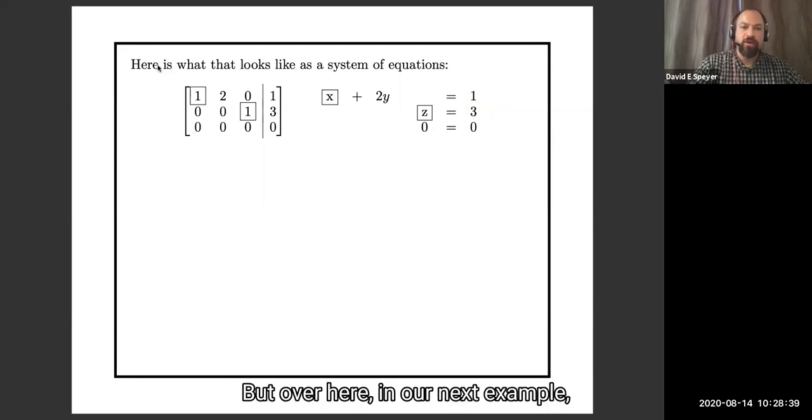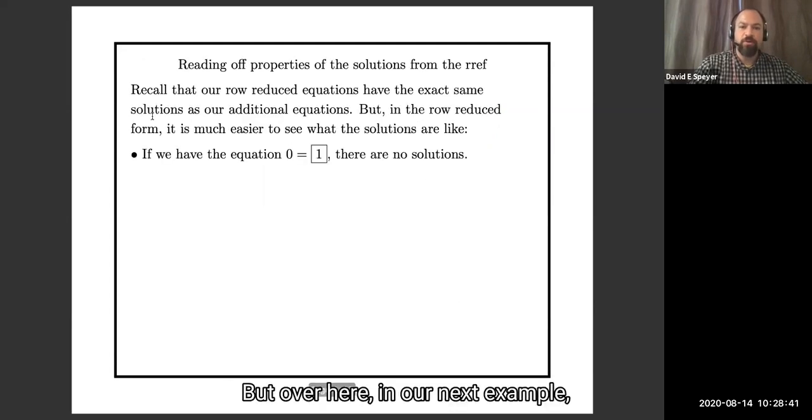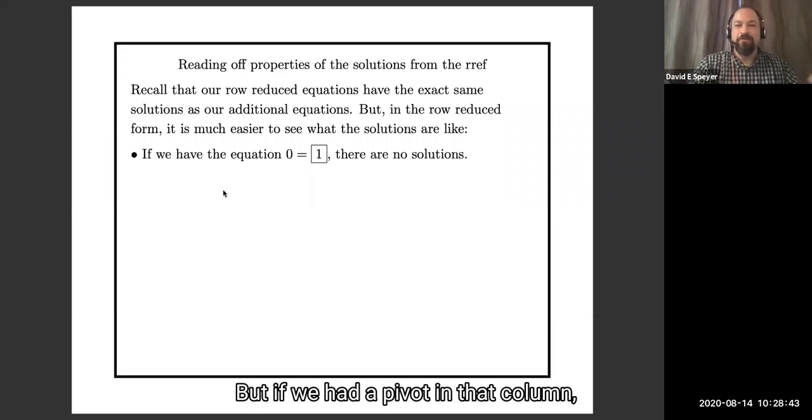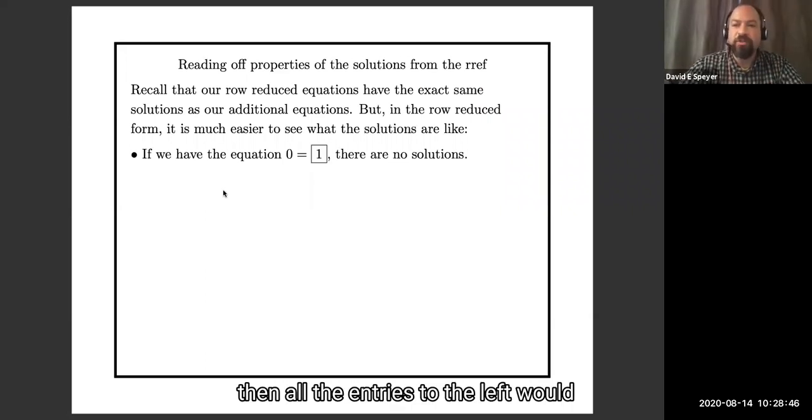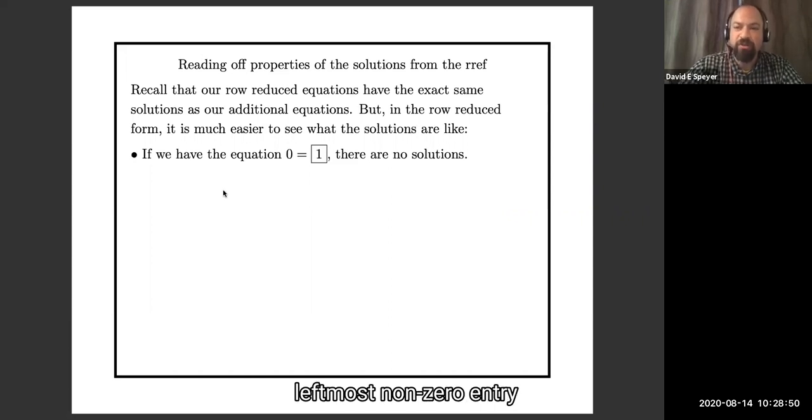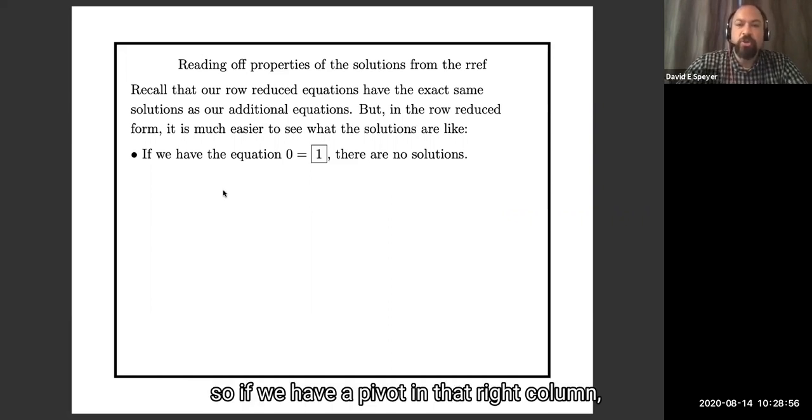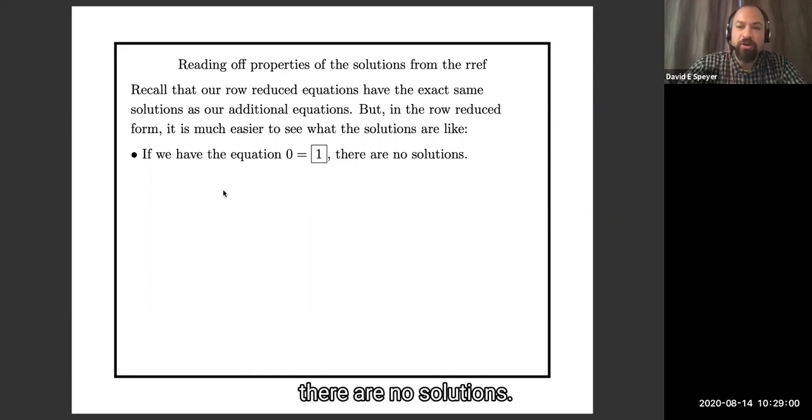But over here, in our next example, well, I didn't give an example, but if we had a pivot in that column, then all the entries to the left would be zeros, because a pivot is always the leftmost non-zero entry, we would have the equation zero equals one, there are no solutions to zero equals one. So if we have a pivot in that right column, if we have zero equals one, there are no solutions.